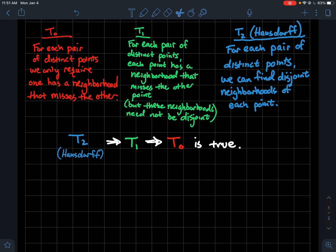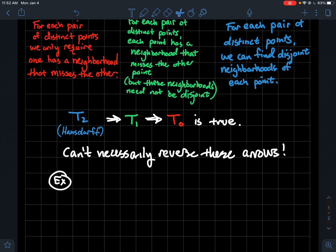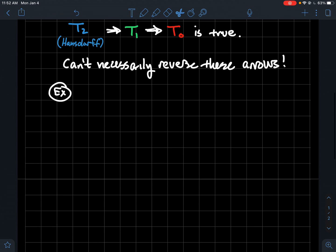So what we want to do is we want to show that if I try to reverse those arrows, you're not necessarily guaranteed that it's going to work. So in other words, the reverse implications are not necessarily true. So we can't necessarily reverse these arrows. So let's look at examples for each one.